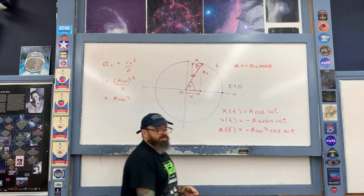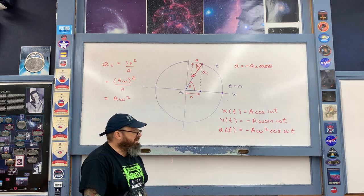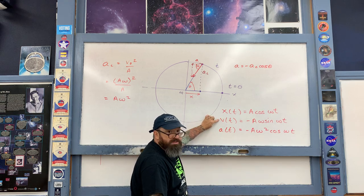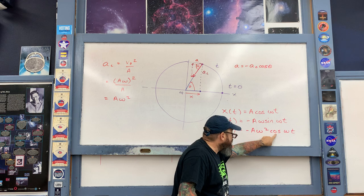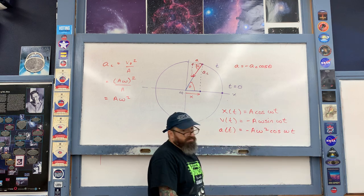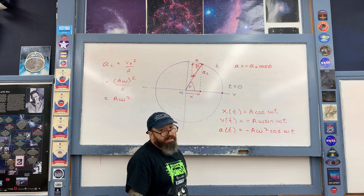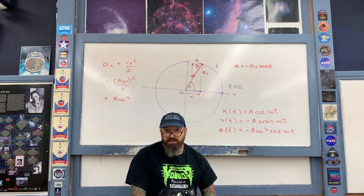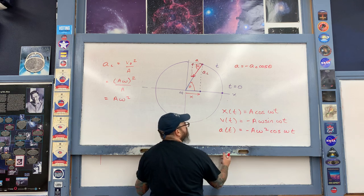The result is a = -Aω² cos(ωt). For those with calculus experience, this is the derivative of v = -Aω sin(ωt): the derivative of sine is cosine, and differentiating ωt brings out another ω, giving -Aω² cos(ωt).